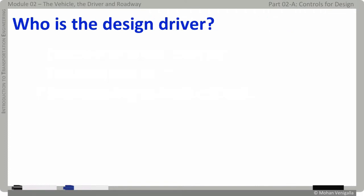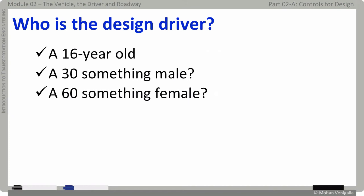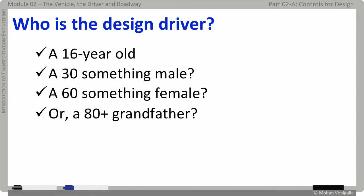We will end this part with something to ponder. We have identified the design vehicle to be a tractor trailer. Then who is the design driver? Is it a 16-year-old who is just learning to drive — this driver will have fantastic reflexes, but what about decision-making capabilities? Aren't reflexes and decision-making capabilities a consideration in choosing a design driver? What about a 30-something male with good reflexes and good judgment? Or is it a 60-year-old woman who is losing her reflexes and vision? Or is it an 80-year-old who has terrible reflexes and very poor vision — because if this person can drive on the road safely, everyone else can, right? Think about it.